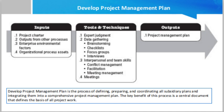The preliminary project scope statement forms the basis of the scope section of the project management plan and includes a description of the scope, its boundaries, and the major deliverables. Project management processes are descriptions of how the project will be managed — for example, communication management at your company might include status updates included in the project bulletin board.